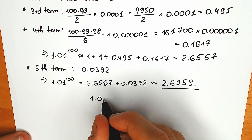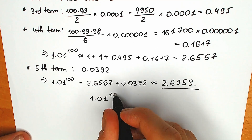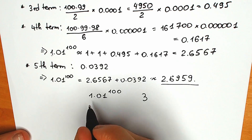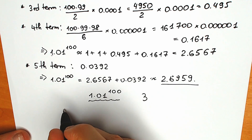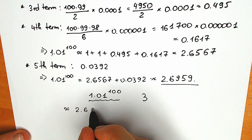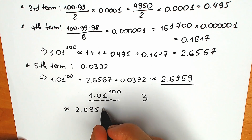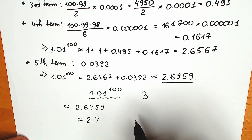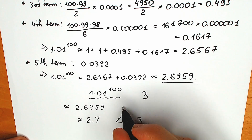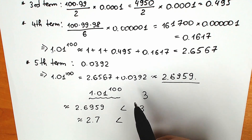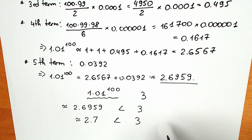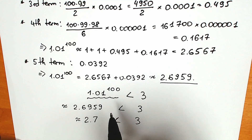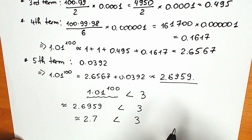So our expression 1.01 to the power 100, compared with 3: we now know that the left side is approximately equal to 2.6959, which we can round to about 2.7. And 2.7 is less than 3. So our final answer is that 1.01 to the power 100 is less than 3.